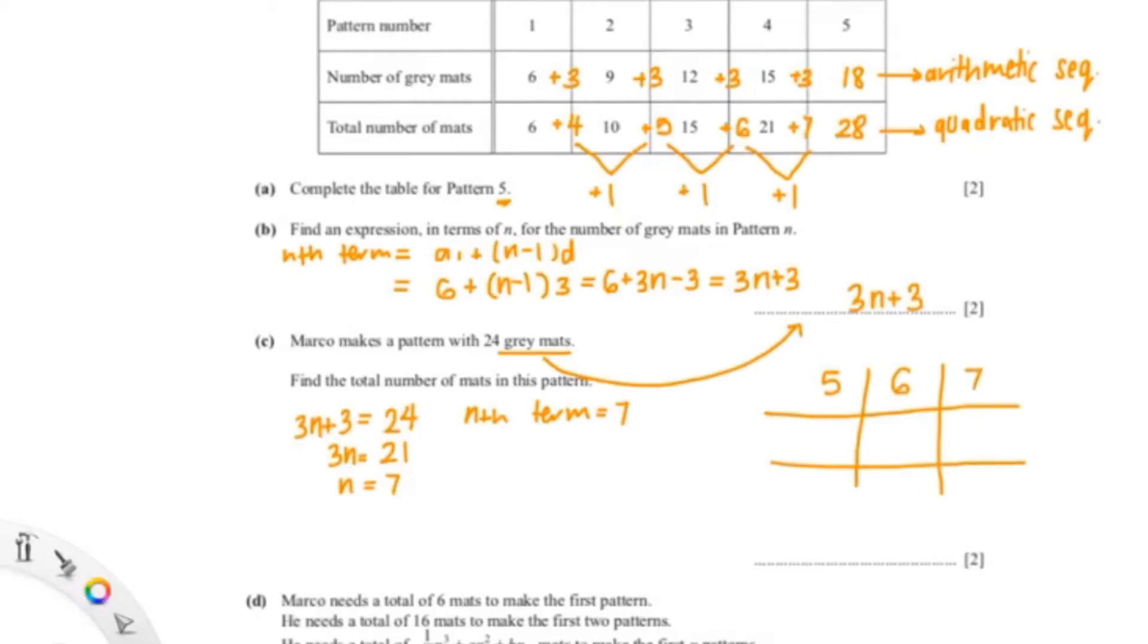So that would be 5, 6, and 7. I'm just going to copy those values onto my grid, so that would be 18, 28. So I'm going to add 3 here, add 3 here, giving me 24 and 21.